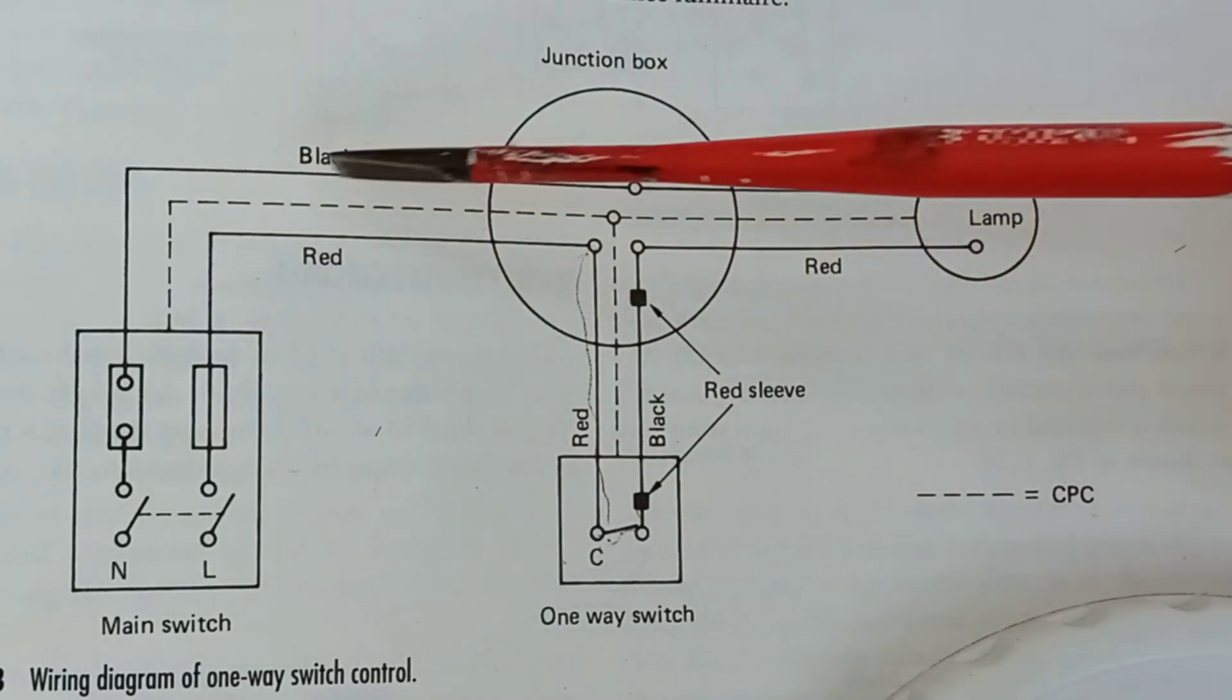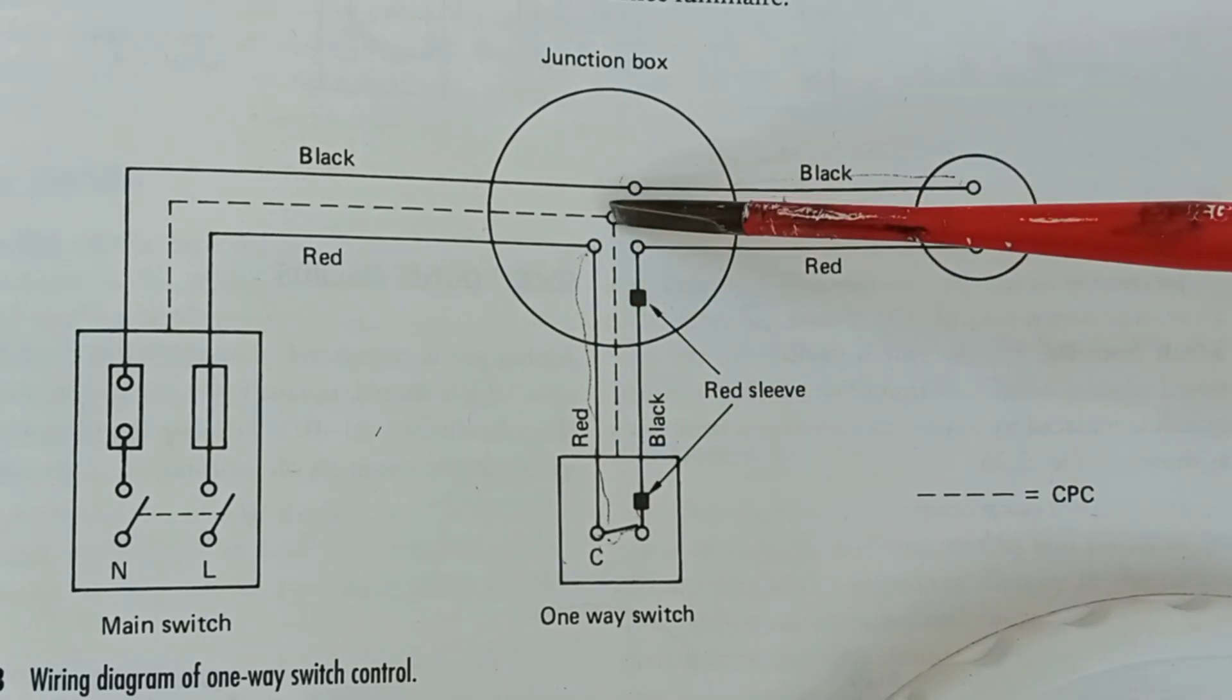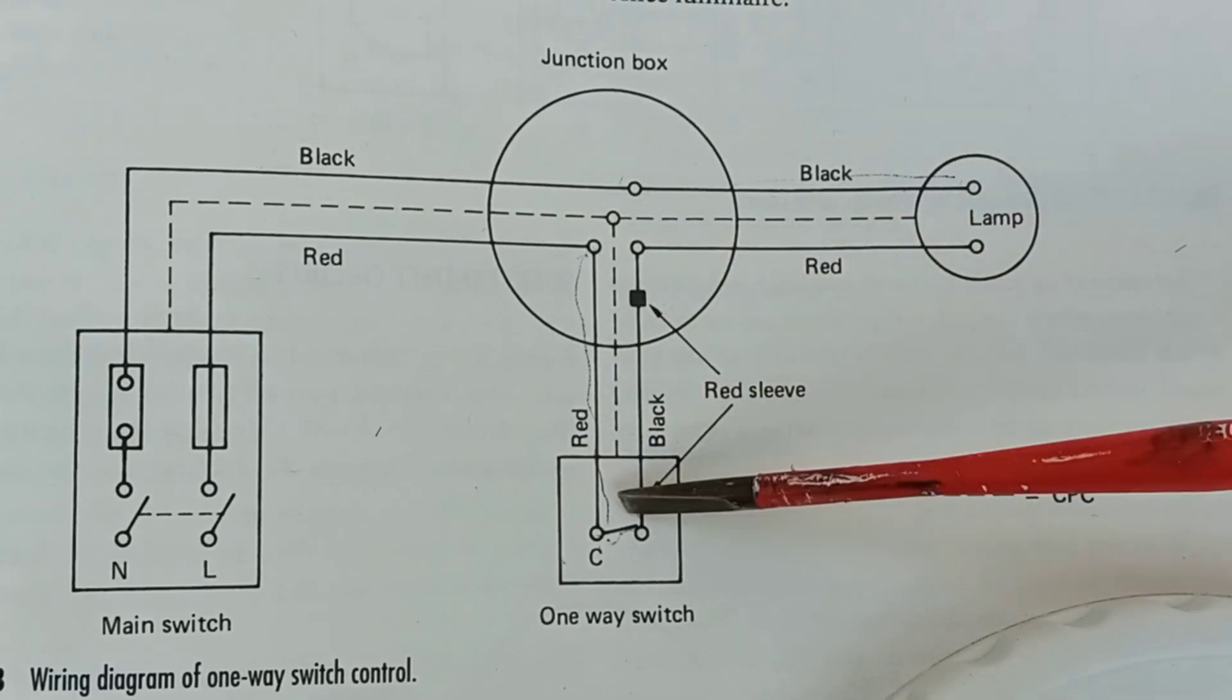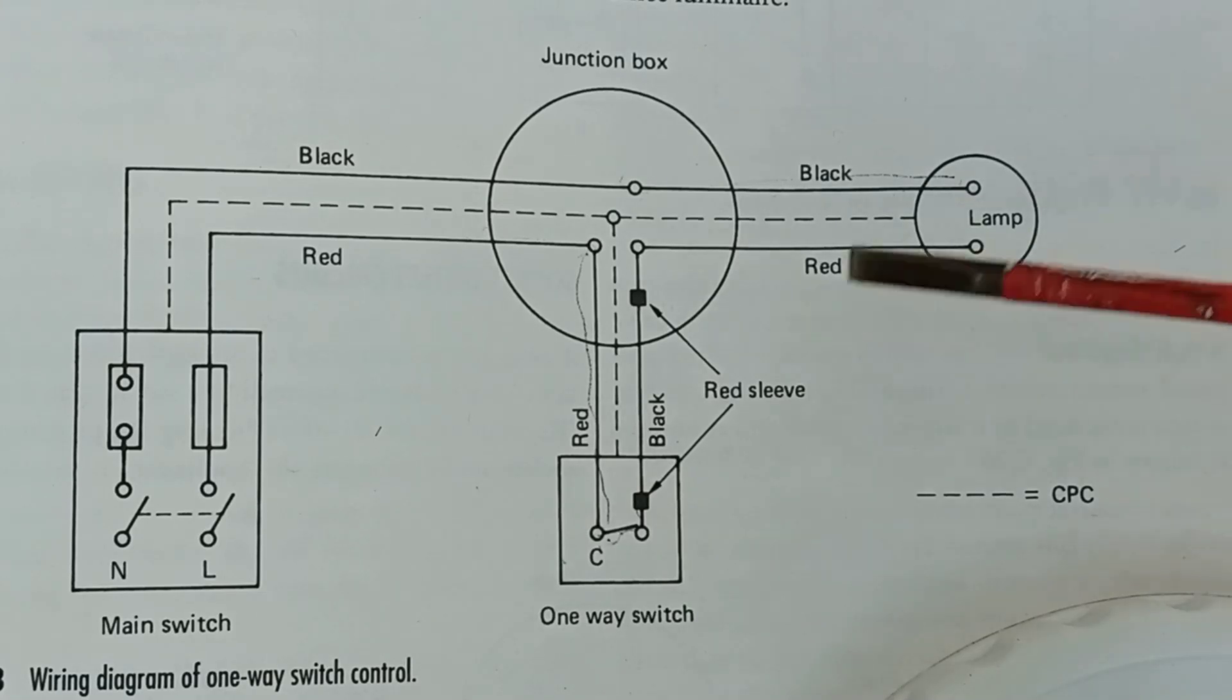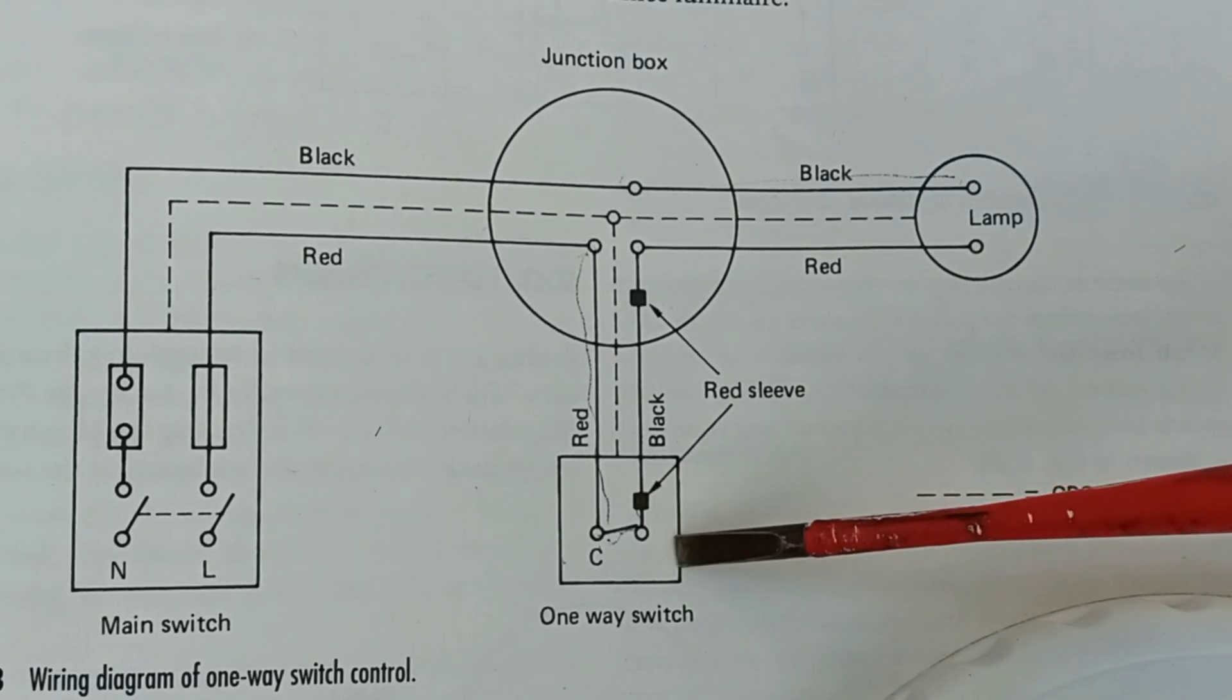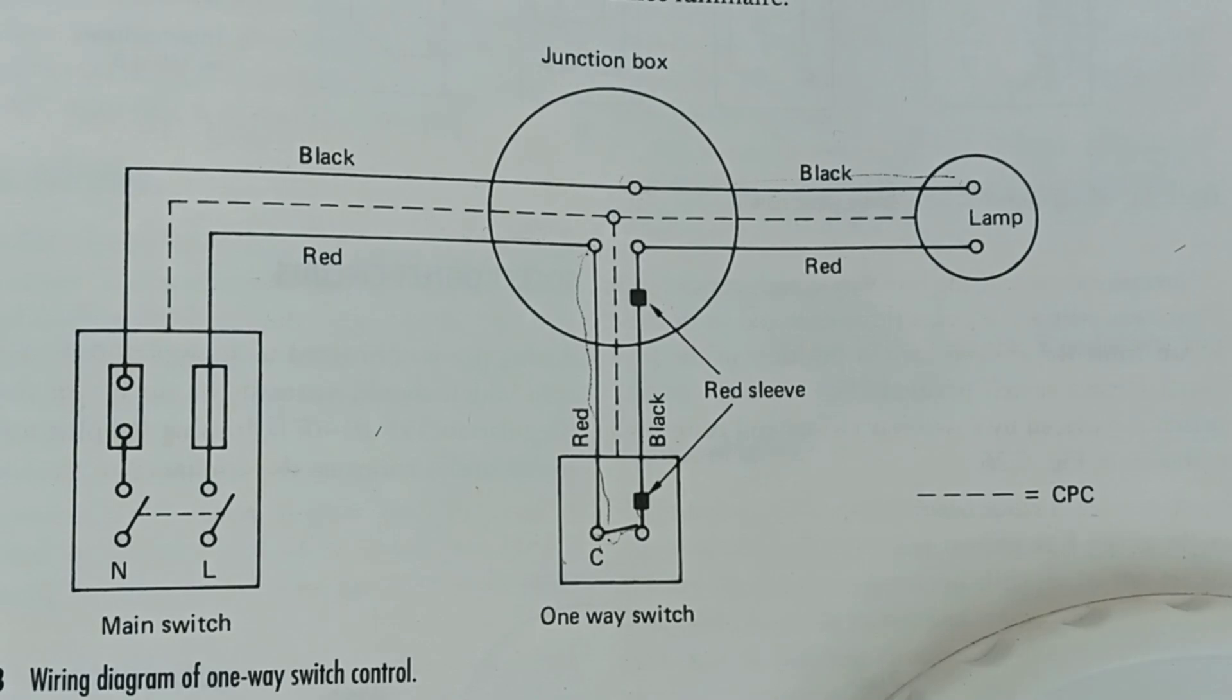And the earth is terminated there in the junction box, also down in the back box of the light switch, and also at the light fitting. If you're using a metal light switch, you should terminate from the back box to the metal light switch as well. But ours was plastic, so you just terminate the back box. And that is the simple diagram of a one-way switched lighting circuit.